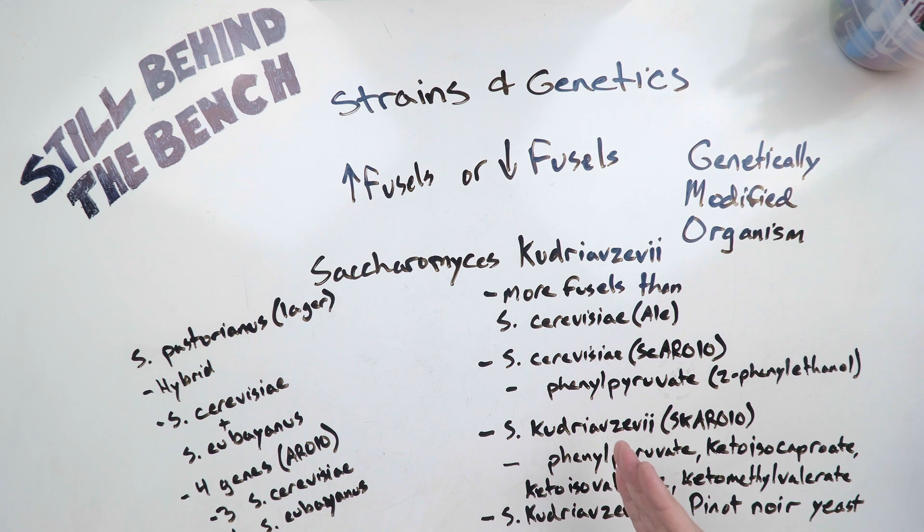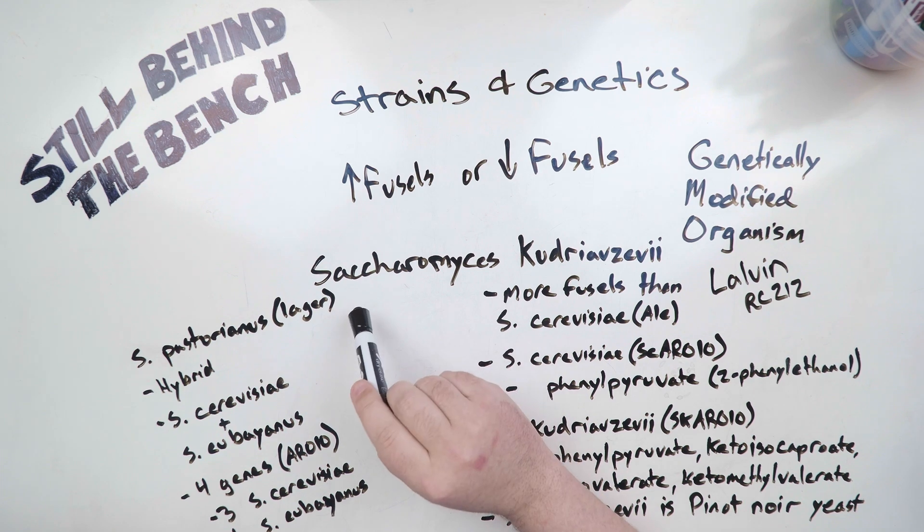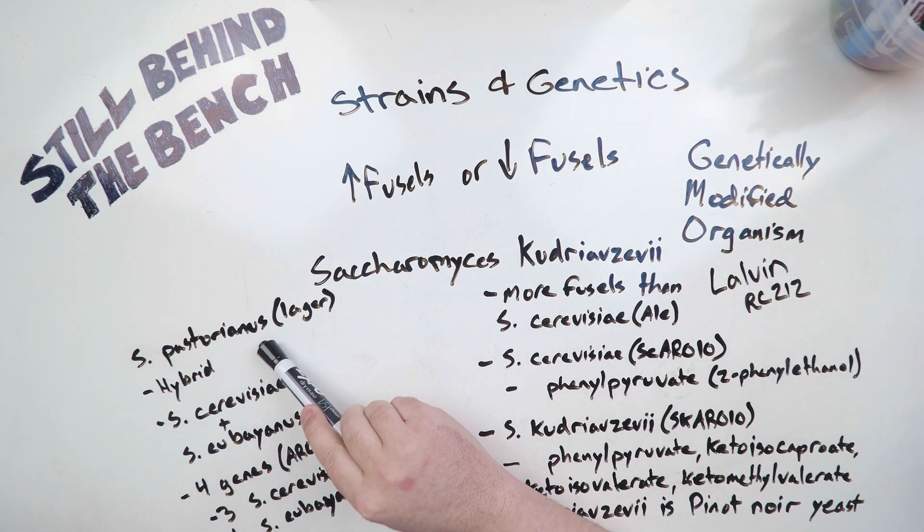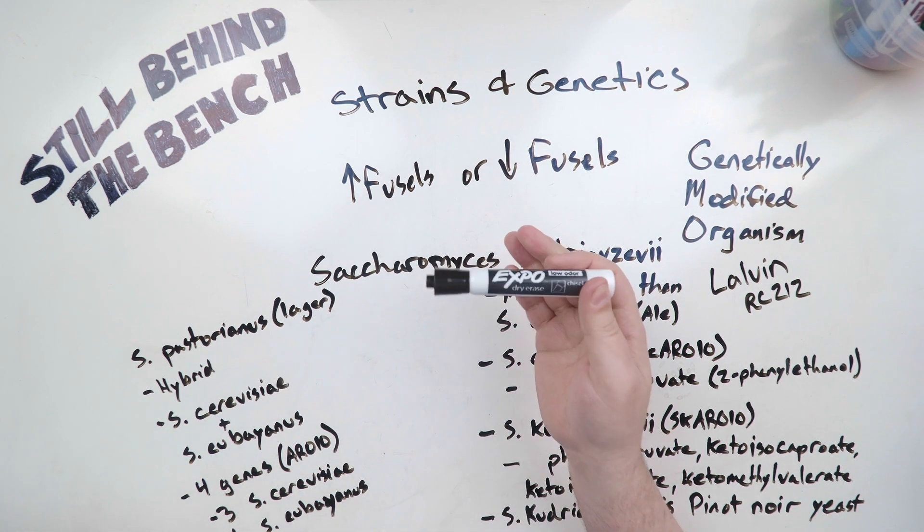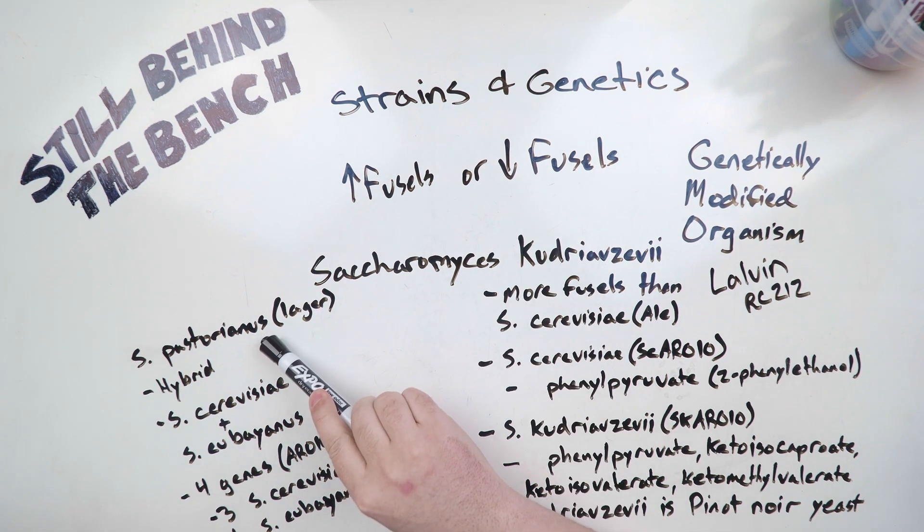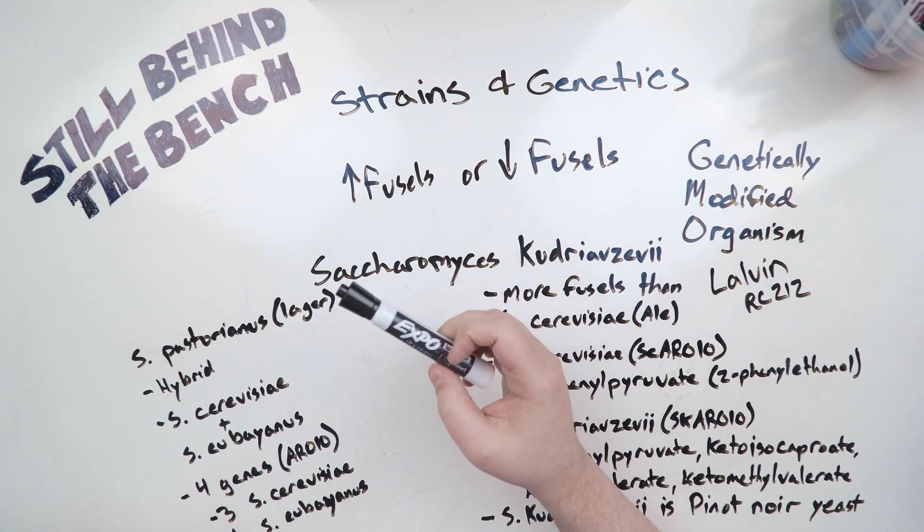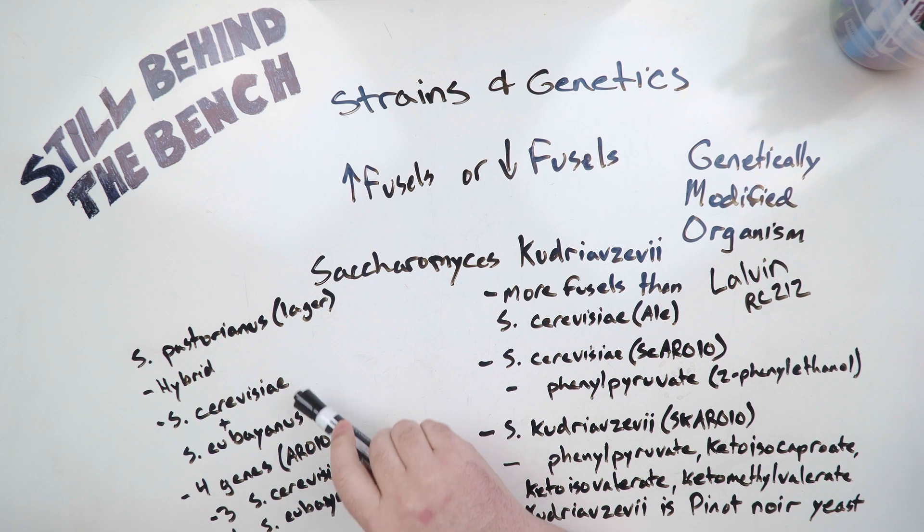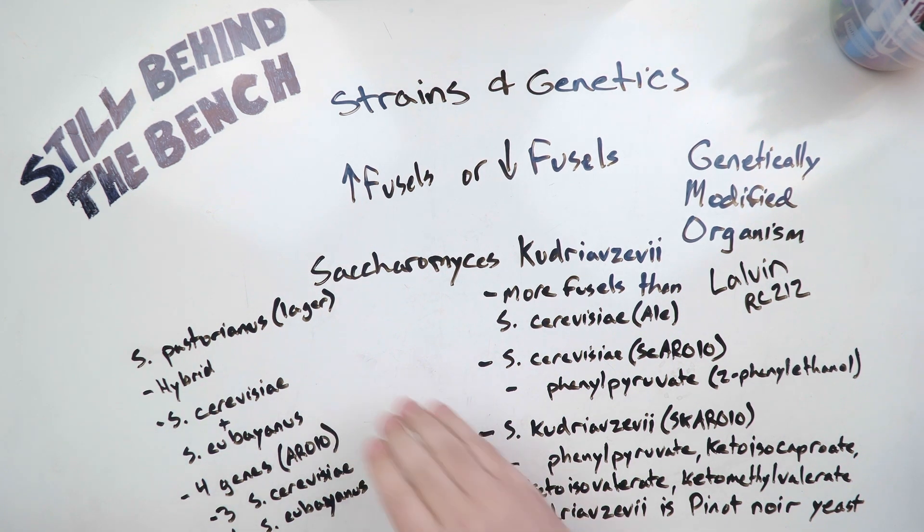In case you're wondering, Saccharomyces kudriavzevii is actually a pinot noir yeast so you can get it most places that sell wine yeasts. Another example I'd like to go on to is Saccharomyces pastorianus. If you've ever used a lager yeast before most likely it was a pastorianus. Pastorianus is a hybrid of cerevisiae and another species of yeast called eubayanus.